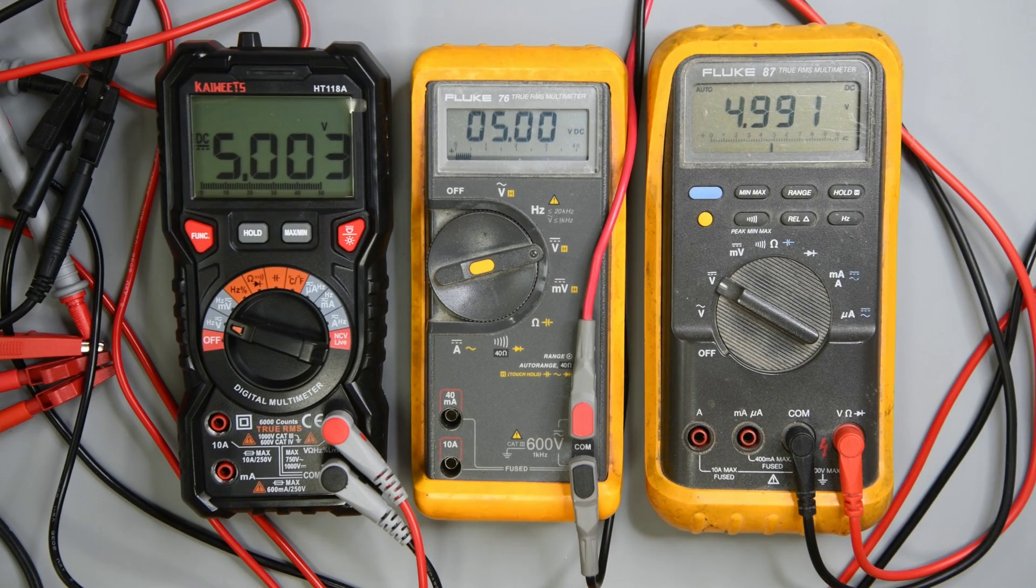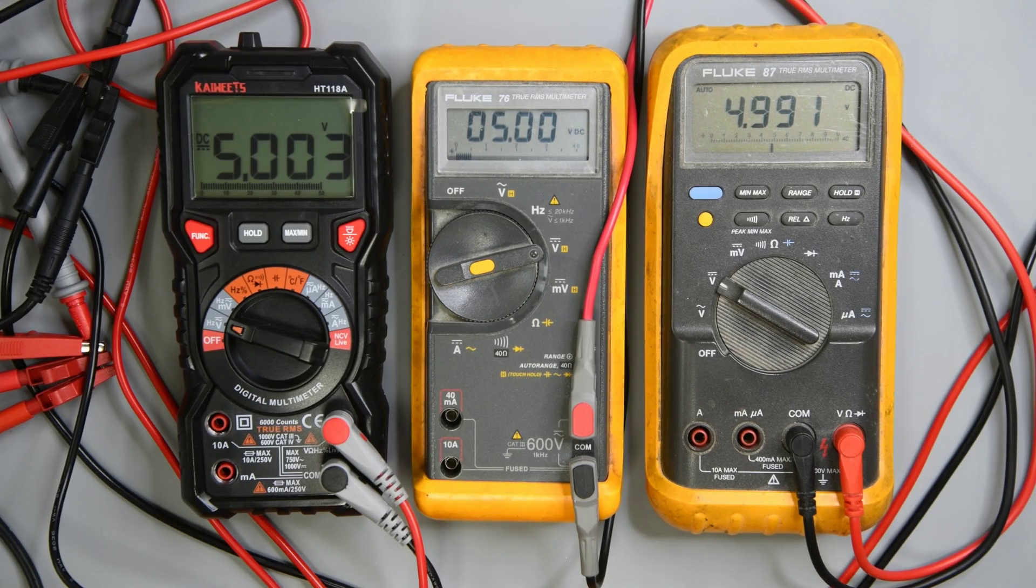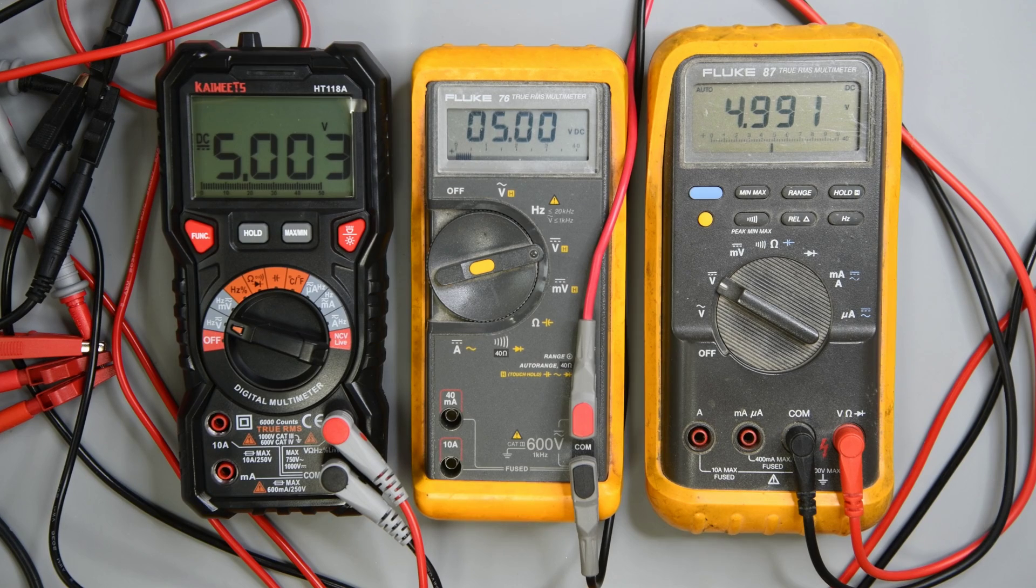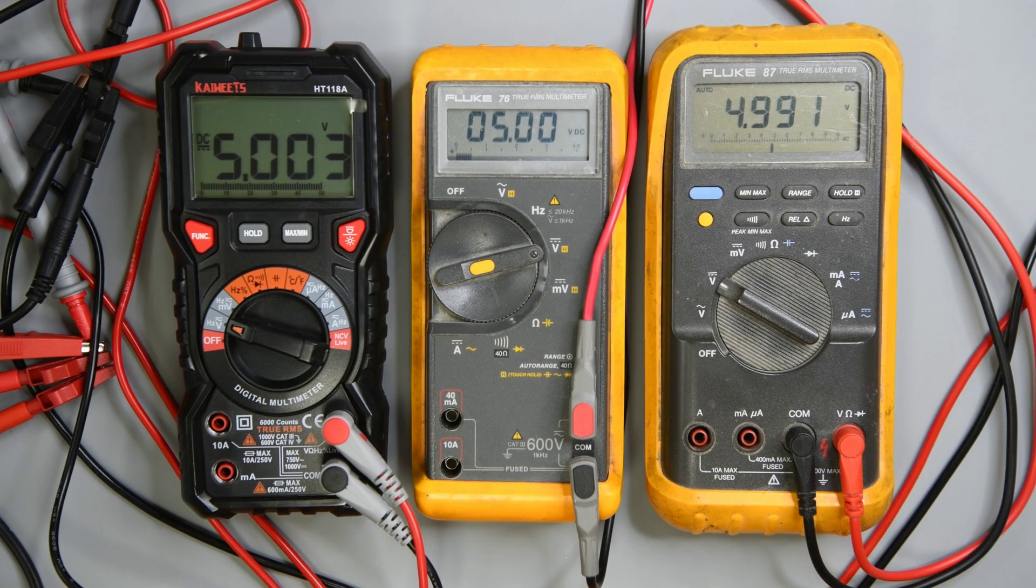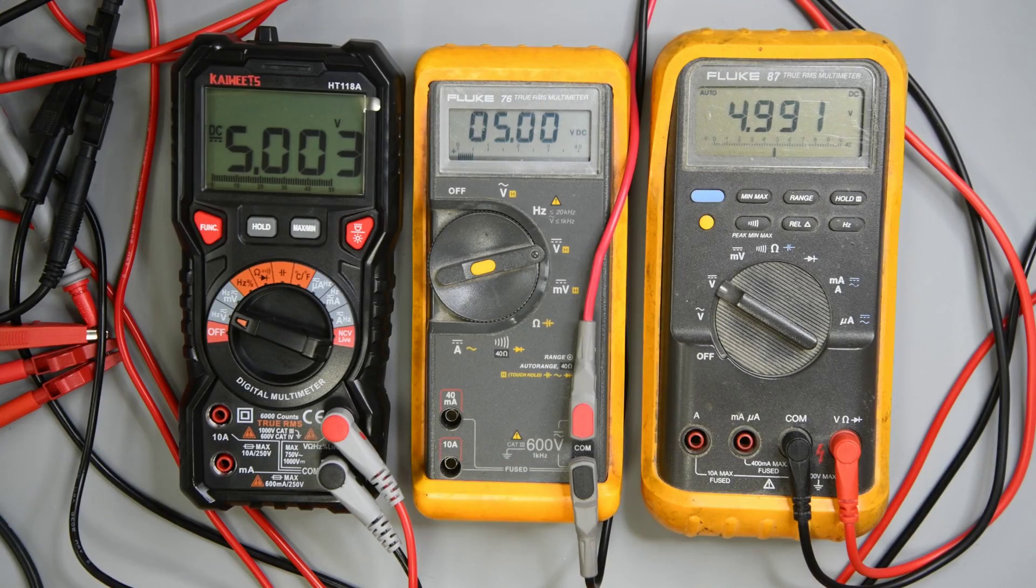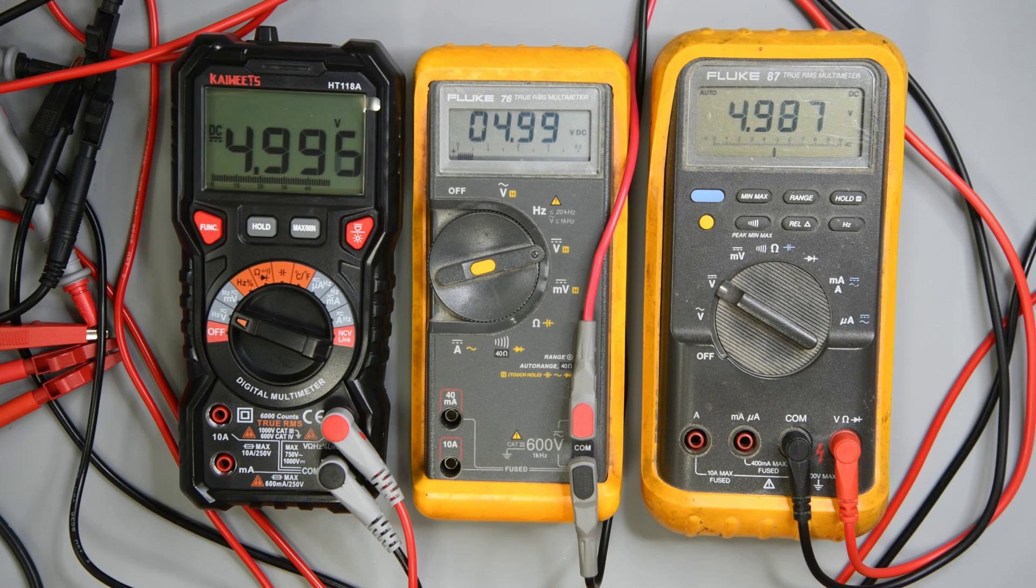Of course one of the most important things for a multimeter to do is give an accurate DC voltage reading. The Fluke 87 here is really old and does read a few millivolts low. Best I can tell. The 76 here is old but not as old as the 87. Voltage reading over a half an hour was stable as could be and well within the 0.5% accuracy listed.